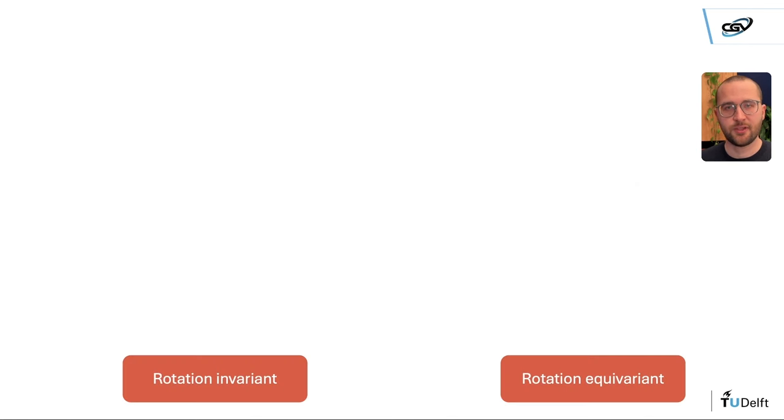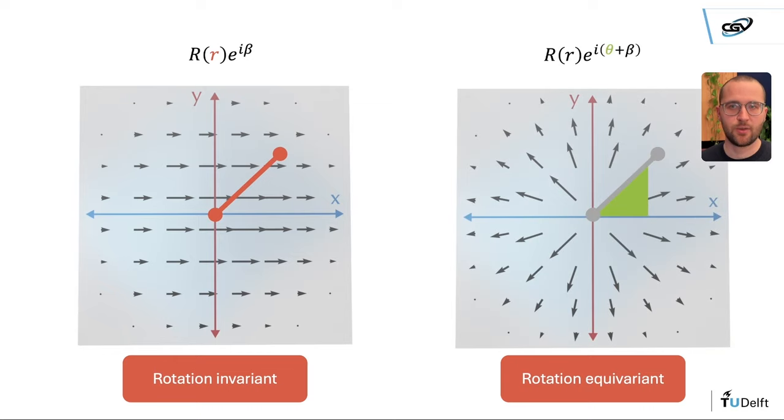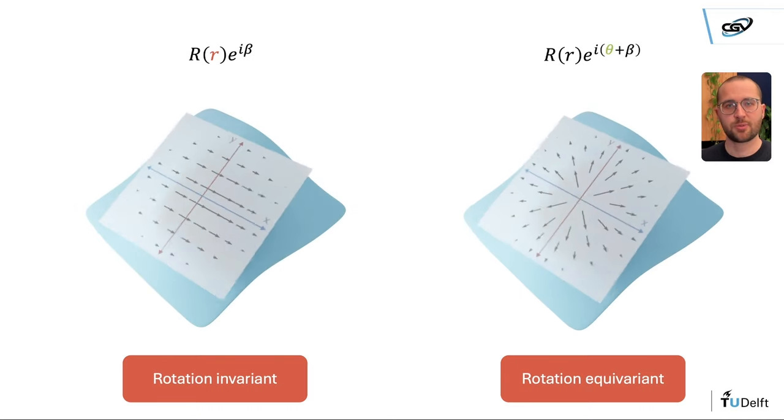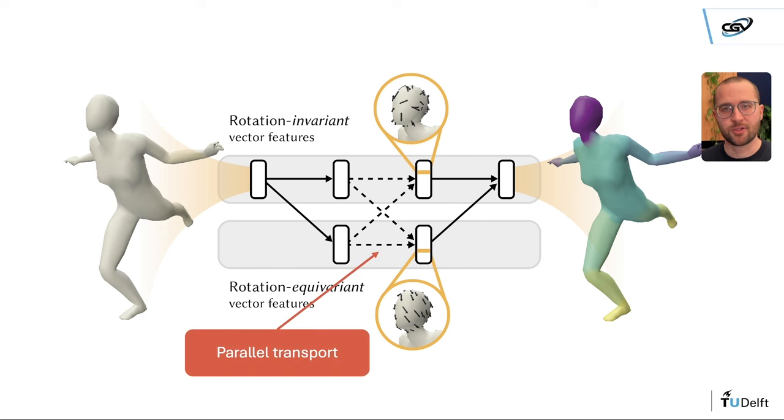We show that you can construct filters that are rotation invariant and equivariant, which can be applied through the exponential map. You can use parallel transport to keep the equivariant property and arrange the network so that we get rotation invariant features as output.